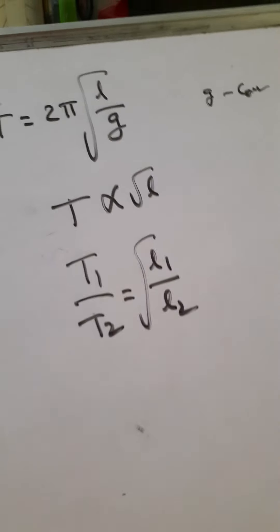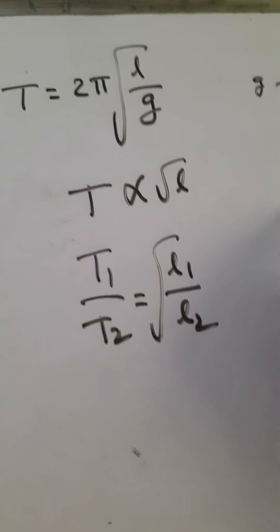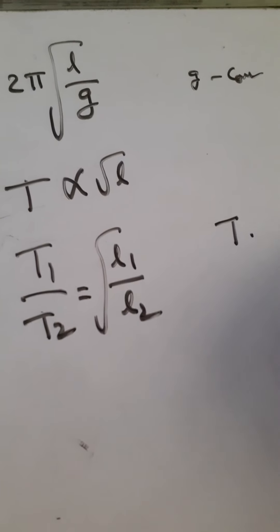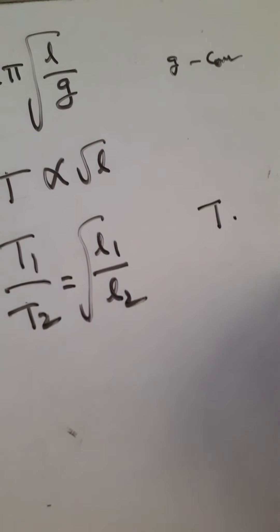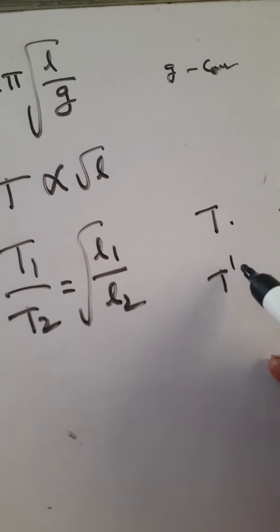If you know this one, you are able to do the problems. For example, initial time period of pendulum is T. Length of pendulum doubled. L1 is L, L2 is 2L. What is the final time period T dash? Question is this.